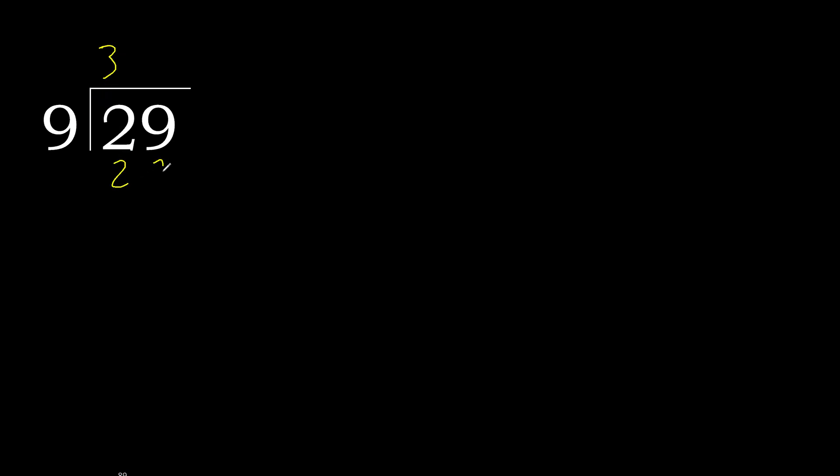9 multiplied by 4 is greater. Multiplied by 3 is 27. 29 minus 27 is 2.